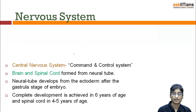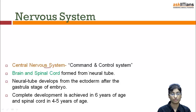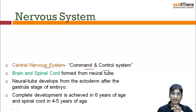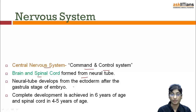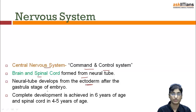Now I will teach you specifically about the central nervous system. The central nervous system is a command and control system — it commands and controls all the body organs. The brain and spinal cord are the main parts of the central nervous system. They are formed from the neural tube, which is developed from the ectoderm during the development of the embryo.